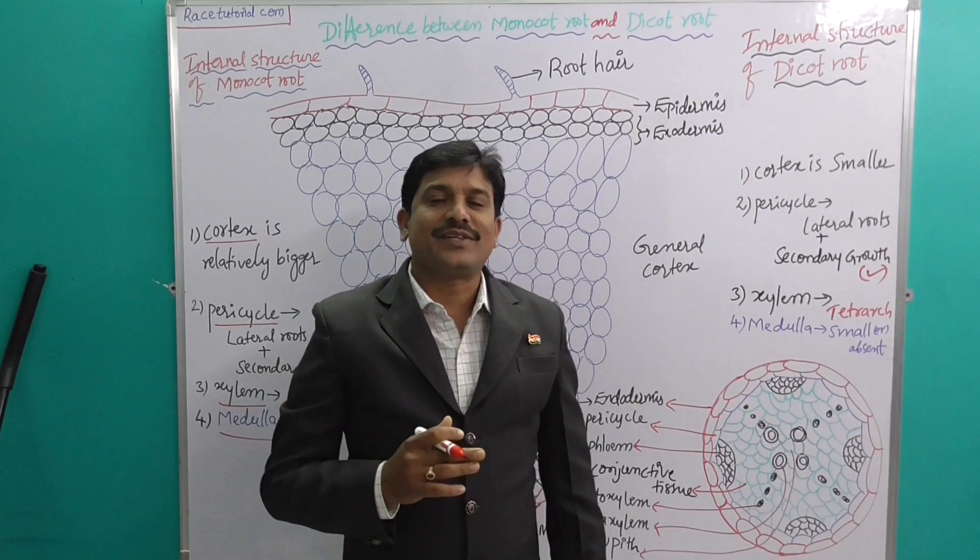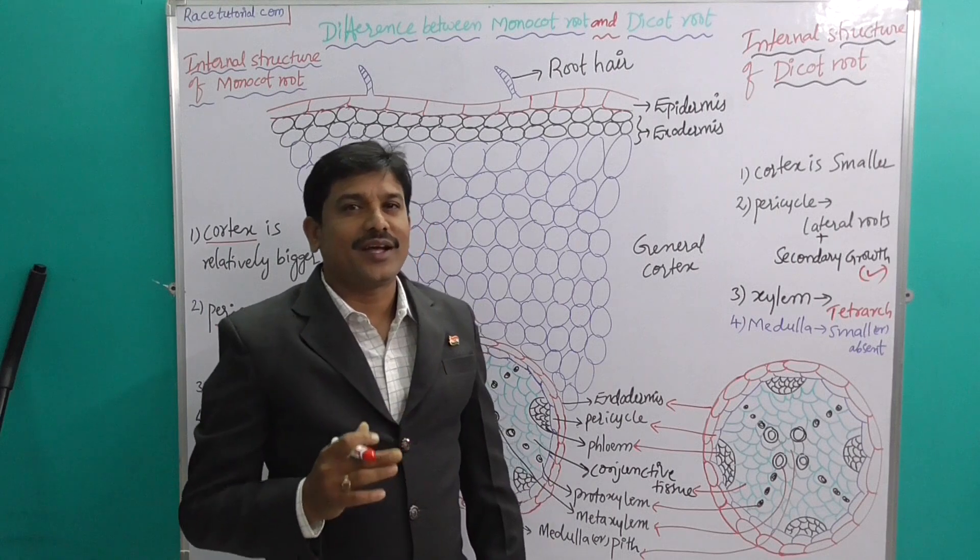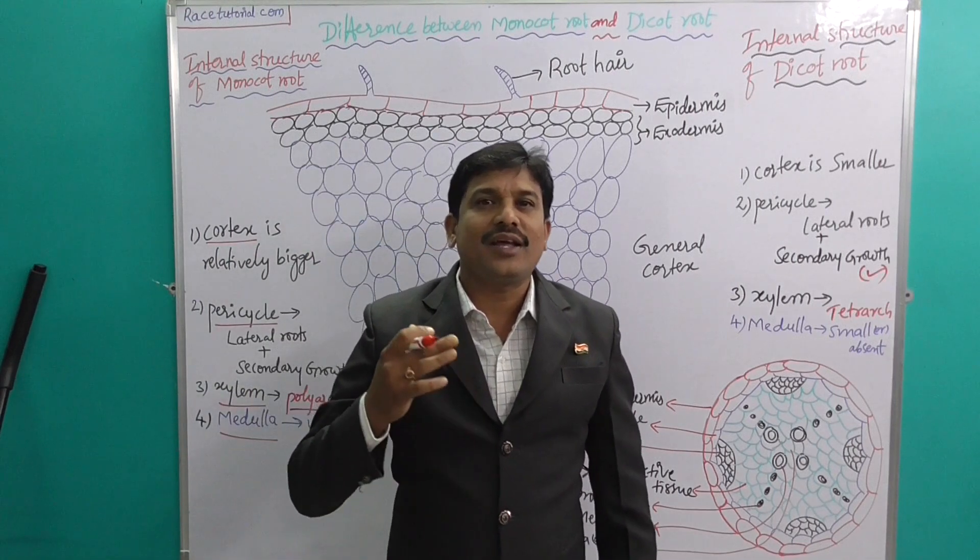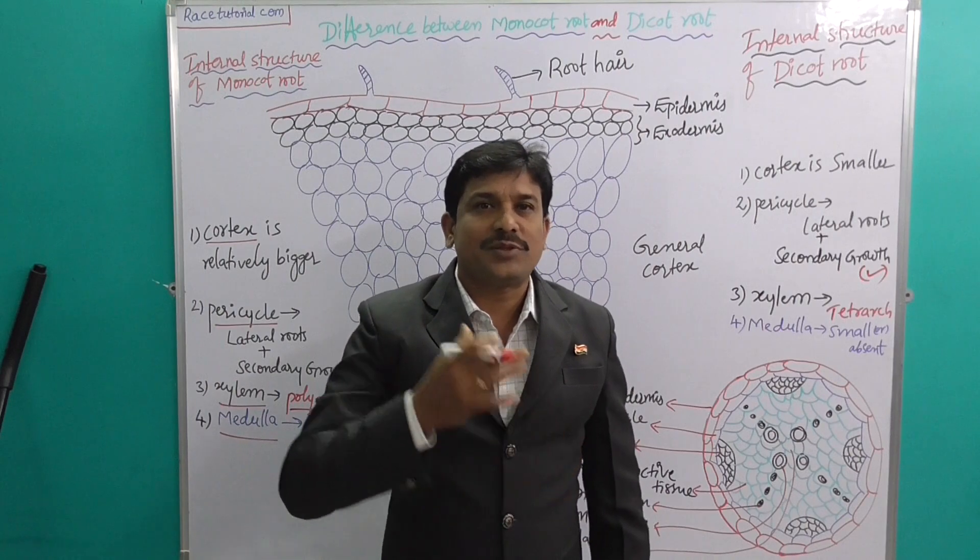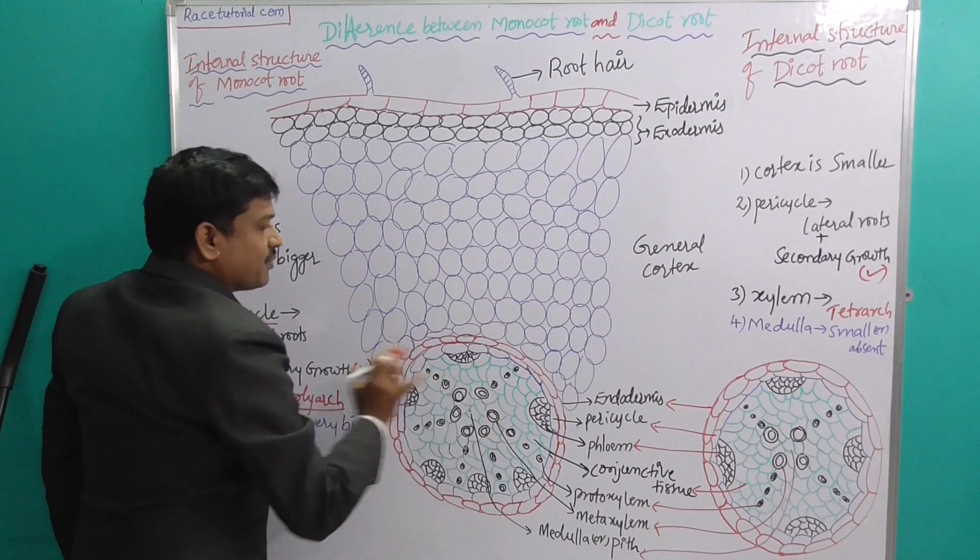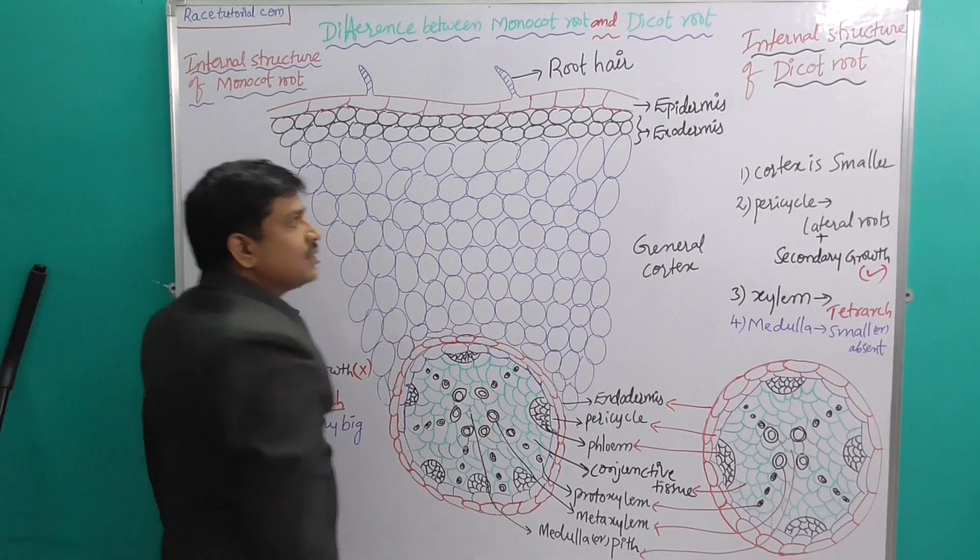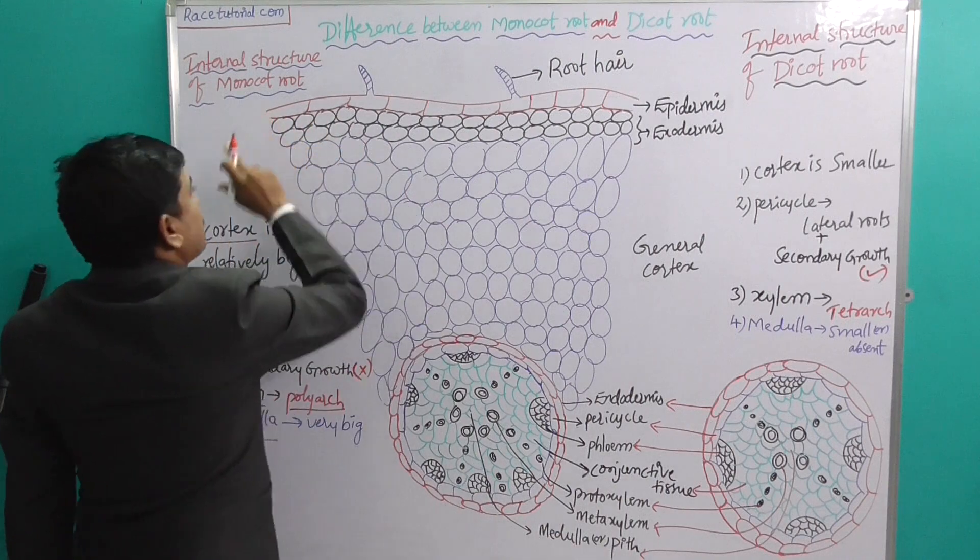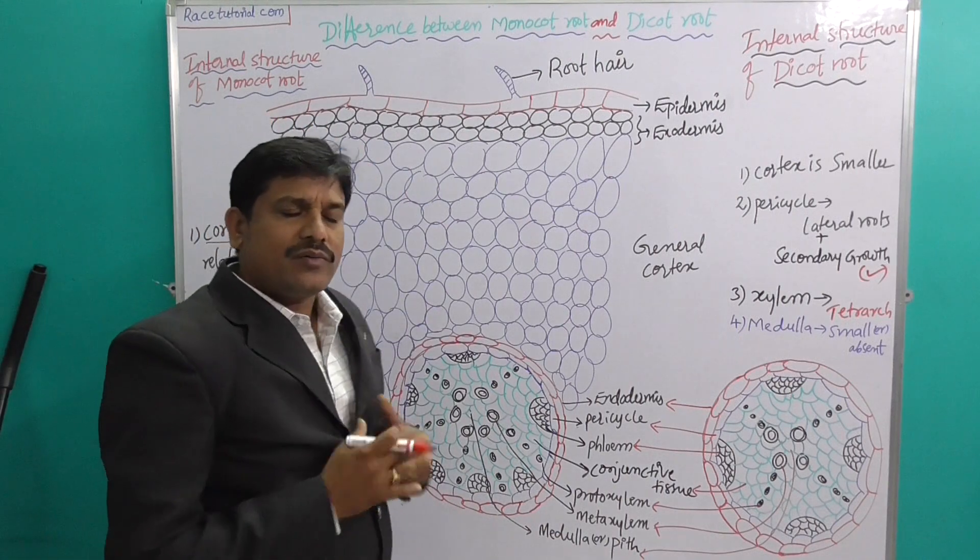Let us discuss the difference between monocot and dicot. What is monocot? What is dicot? We already studied this in previous videos. Here, this total diagram is called monocot and this is dicot. Both have epidermis.